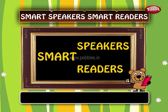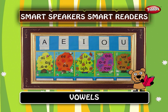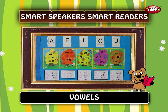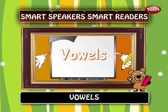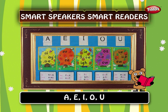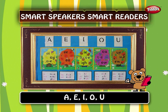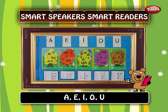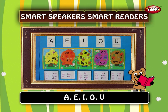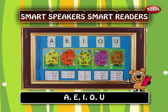Smart Speakers, Smart Readers. Here are five brothers of the English alphabet whom we call vowels: A, E, I, O, U. We put 'an' before a word which starts with a vowel sound.